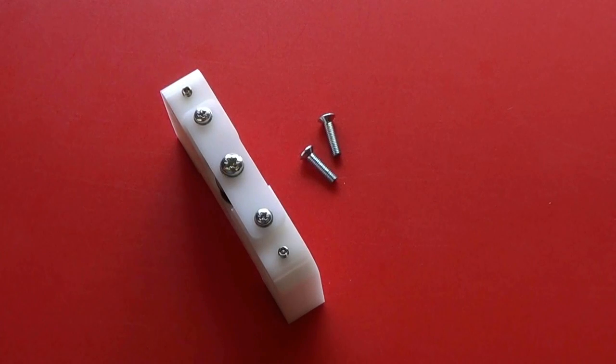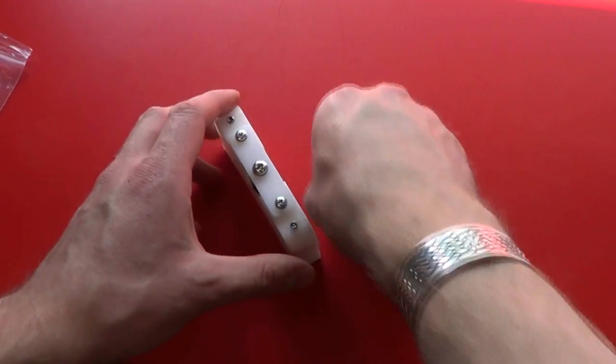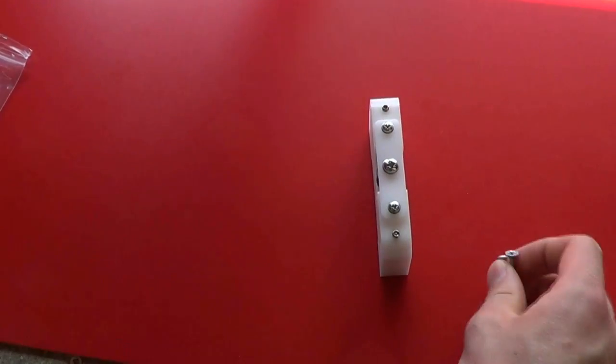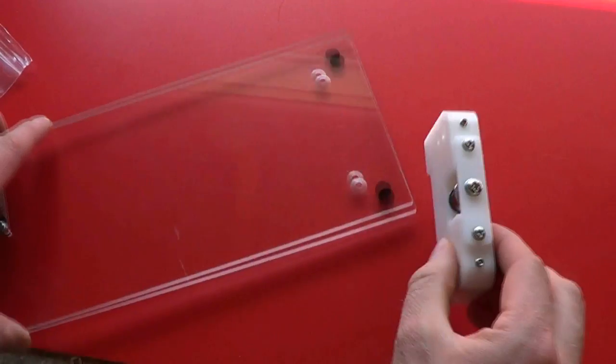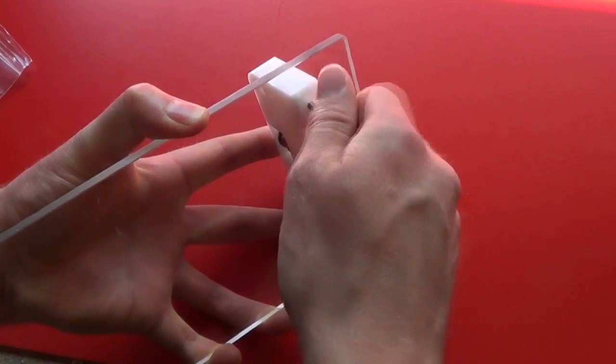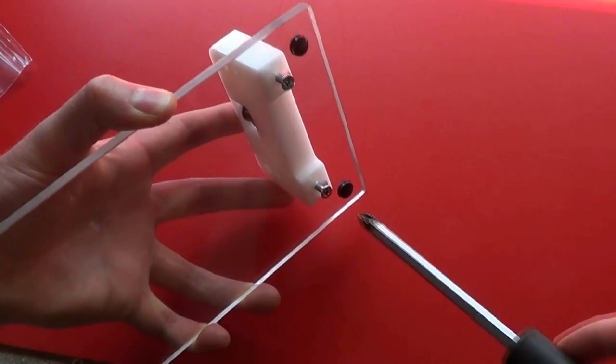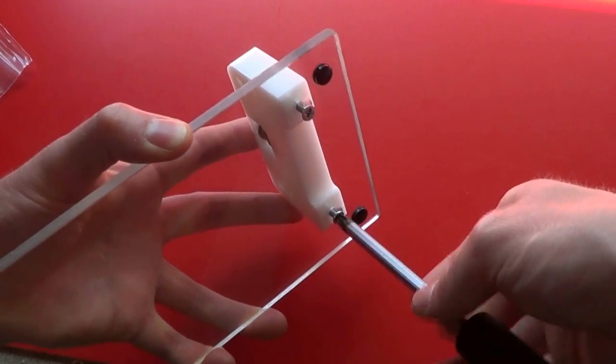And now, using the two remaining countersunk screws, attach this to the other end of the base and tighten with the posi drive number 2 screwdriver.